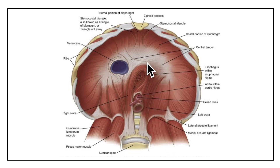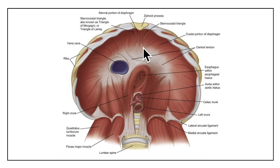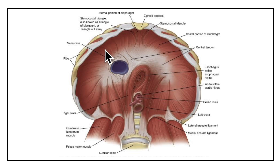Now let's look at the sternal, costal, and lumbar parts of the diaphragm in detail. The sternal part arises by two fleshy slips from the back of the xiphoid process. The costal part arises from the inner surfaces of the cartilages and the adjacent parts of the lower six ribs on each side.